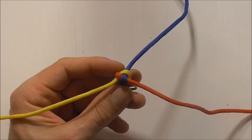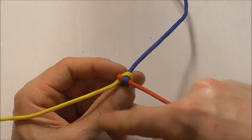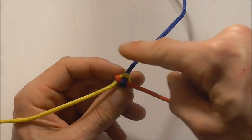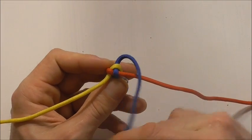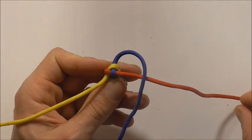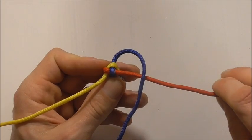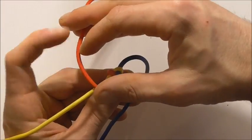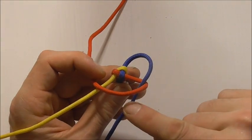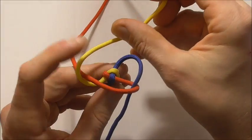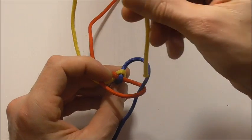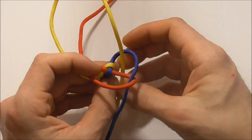So again alternating the crown knots we went anti-clockwise so this set is going to go clockwise. Blue over the red, red over both the blue and the yellow, yellow over the red. And then down through that blue loop.